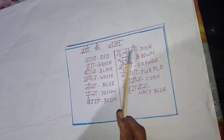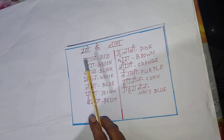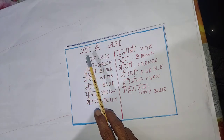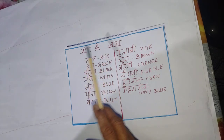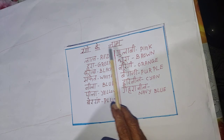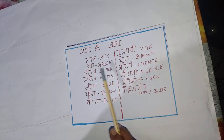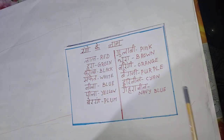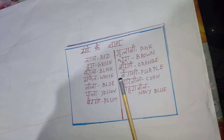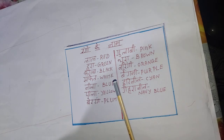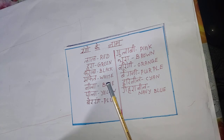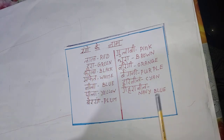Next, Rangon ke nam. Rangu means color. Rangon means colors — names of colors. You have come across so many colors, isn't it? After rainy season, after the rain, we can see the rainbow in the sky. So there we can see different colors. Now here we can see what are all the colors.